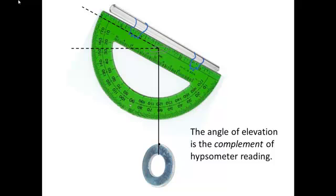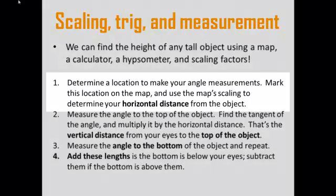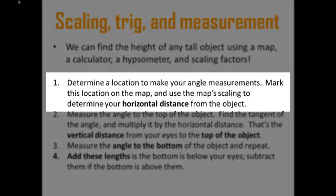So now that we have a tool for measuring angles, let's take a look at the basic process for using it out in the field. We can find the height of any tall object using a map, a calculator, a hypsometer, and the scaling factor idea. The basic steps are as follows. Determine a location to make your angle measurements. Mark this location on the map, and then use the map's scaling to determine your horizontal distance from the object.